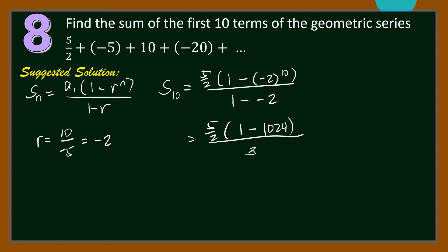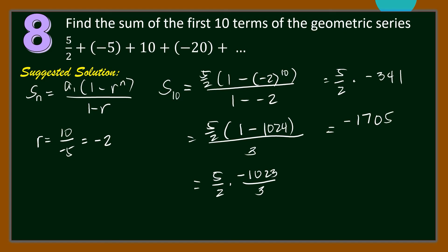1 minus 1024 is negative 1023. So we have 5 halves times negative 1023 divided by 3, which simplifies to 5 halves times negative 341, giving negative 1,705 divided by 2. This equals negative 852.5.